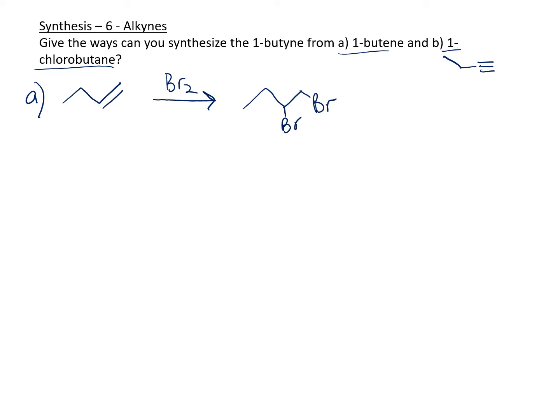Especially for elimination reactions, which this is because you're going from an alkene to an alkyne. You need to have a leaving group. Now we need to eliminate these two bromines. If you do one elimination, you will get an alkene with a bromine.